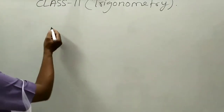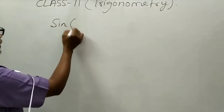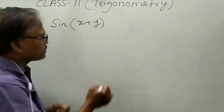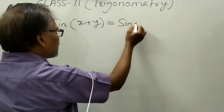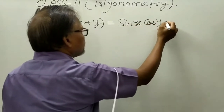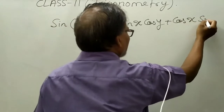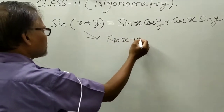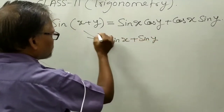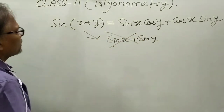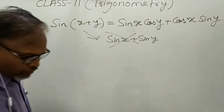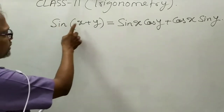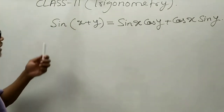Sum and difference means if you have sin(x + y), then you can write it as sin x cos y plus cos x sin y. This is the formula. You will not write it as sin x plus sin y — that is absolutely wrong. You will not distribute the sin into each angle separately, because that is not the formula. This is what you get when you expand sin(x + y), and it is called the sum of the trigonometric functions.